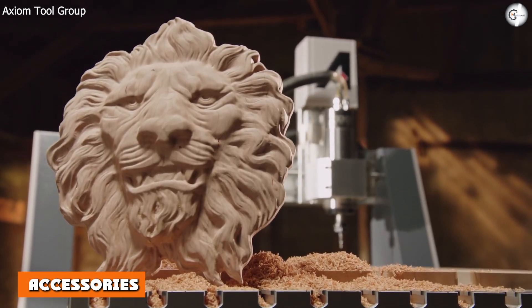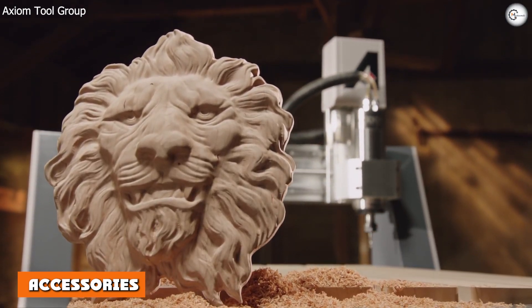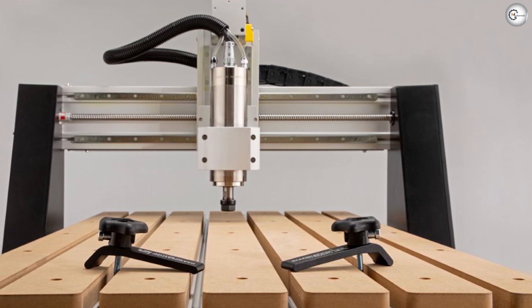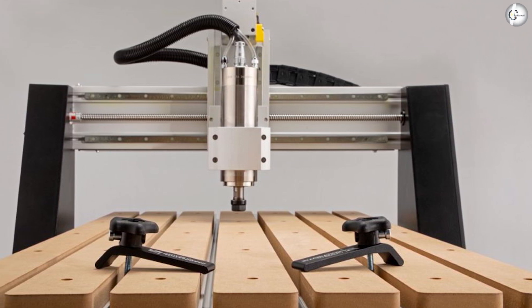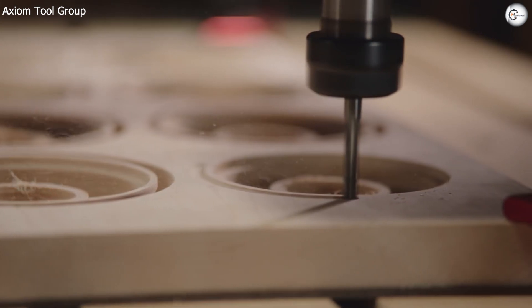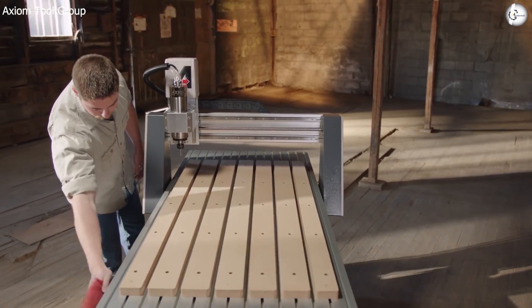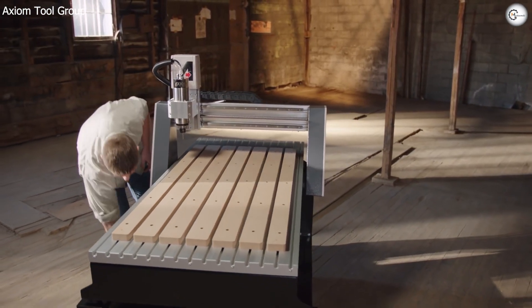Accessories - Pro Dust Shoe. A dust shoe is a necessary accessory if you need to cut materials that produce dust, like wood and plastics. The Pro Dust Shoe can be added to your purchase for around $159 if you are purchasing your CNC machine from the official website. It features a 3.5-inch long skirt made of nylon bristles and a transparent top cover.